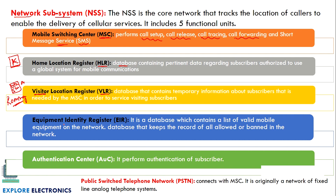The fourth device is the Equipment Identity Register (EIR), a database that maintains a list of valid mobile phone equipment in the network and keeps records of which devices are allowed and which are banned. The fifth is the Authentication Center (AUC), which performs authentication of the subscriber to verify whether the user is legitimate. These are the five functional units necessary in a 2G GSM system.